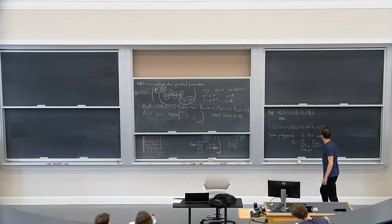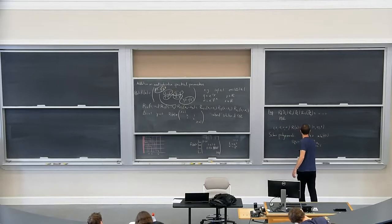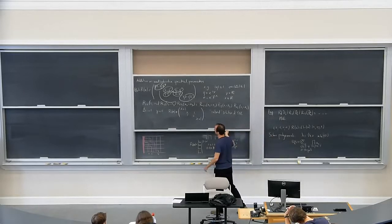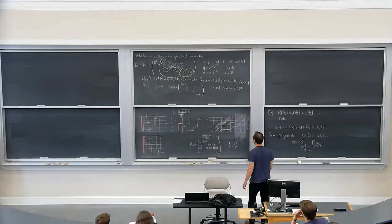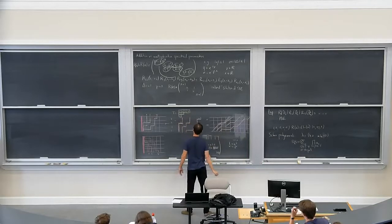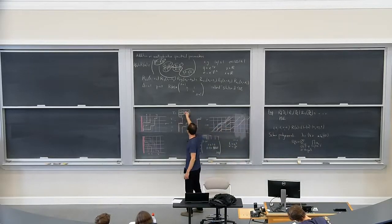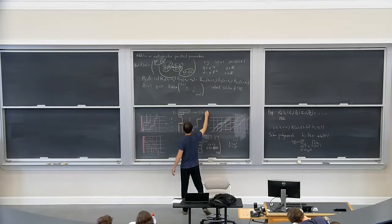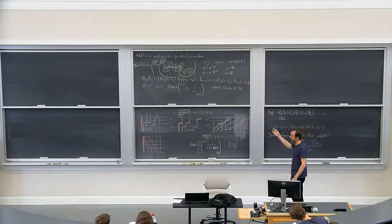Let's work on an example — I literally just took this example from Oli Warnaar's lectures. He considered the shape lambda equals (1,2,4). He considered the various semi-standard Young tableaux associated to it. For one of them, the corresponding polynomial would be x1 squared times x2 squared times x3 squared times x4. Of course there are many other terms in this expansion, but let's focus on just this one term.